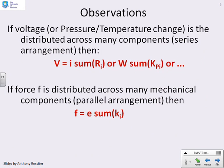So some observations. We said if the voltage or pressure or temperature change is distributed across many components, essentially a series arrangement, then you could have the voltage is current times the sum of resistances.